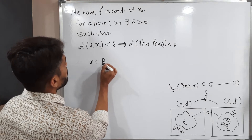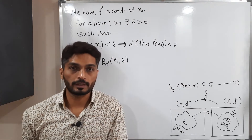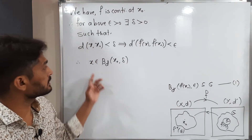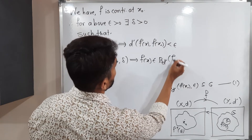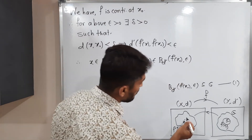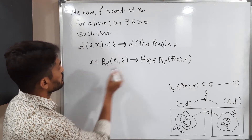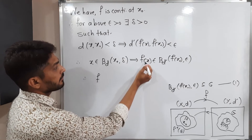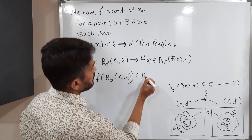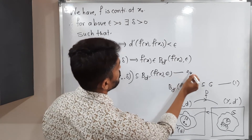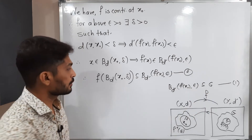The same definition can be written as: x belonging to the open ball B(d; x₀, δ) implies f(x) belongs to B(d'; f(x₀), ε). That means we have one open ball around x₀ with center x₀ and radius δ, and the image of this ball is a subset of that ball. We call this equation (2).